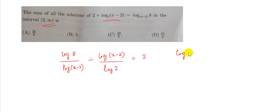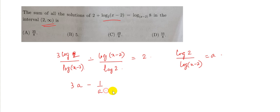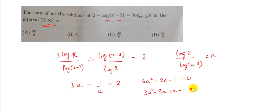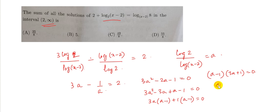Now assume log 2 / log(x−2) = a. Then the equation becomes 3a − 1/a = 2, because log 8 = 3 log 2, so the term becomes 3a. Solving this as a quadratic: 3a² − 2a − 1 = 0, which factors as 3a² − 3a + a − 1 = 0, giving 3a(a−1) + 1(a−1) = 0.